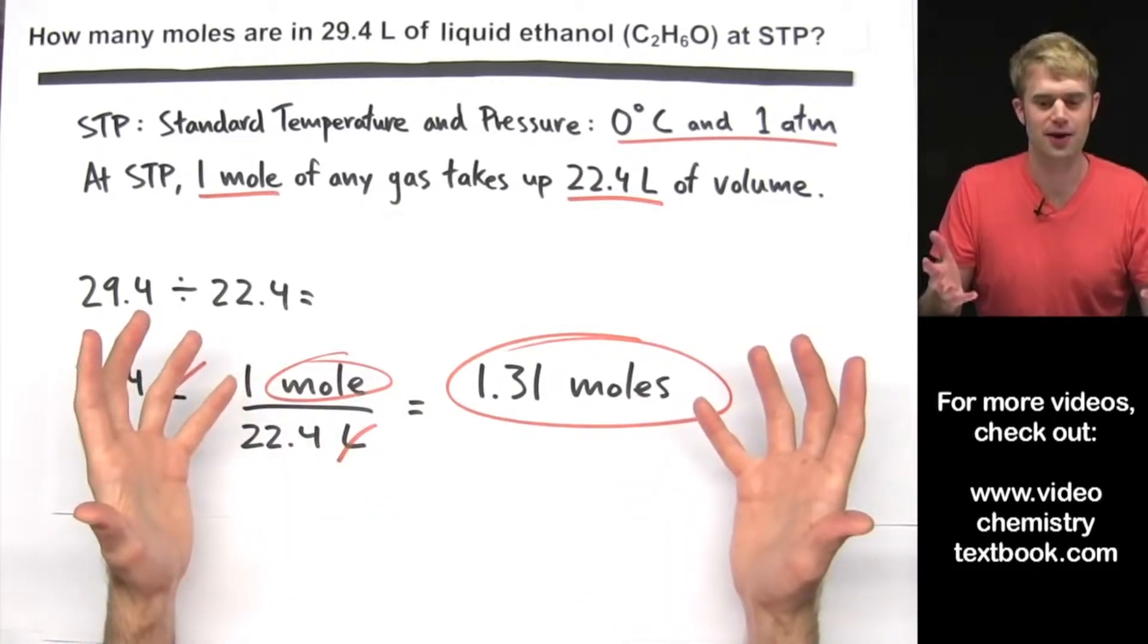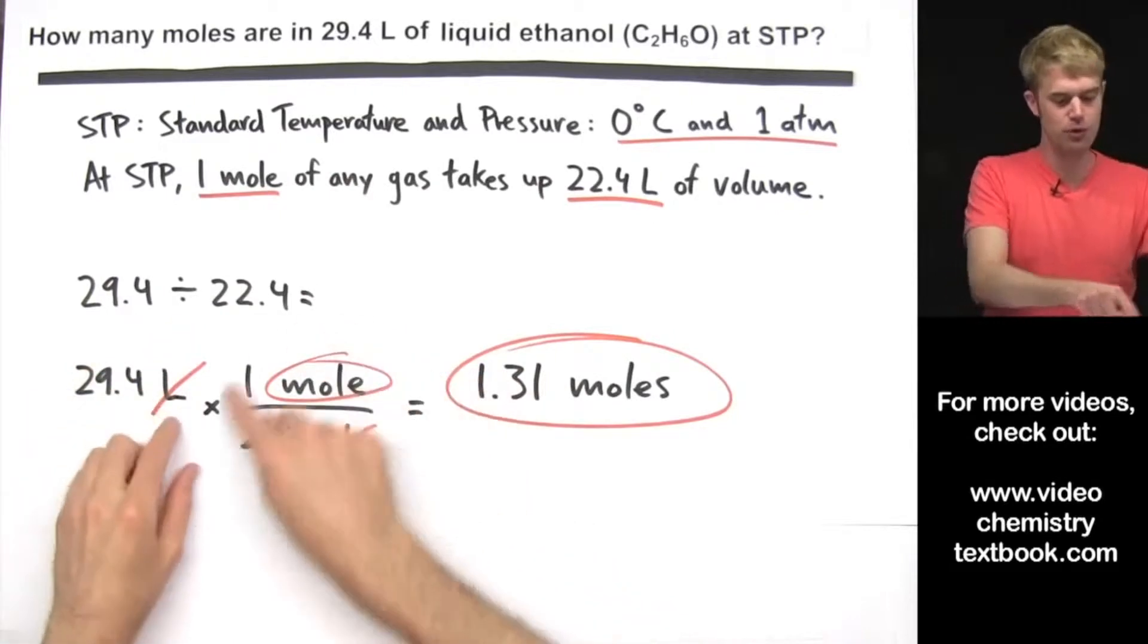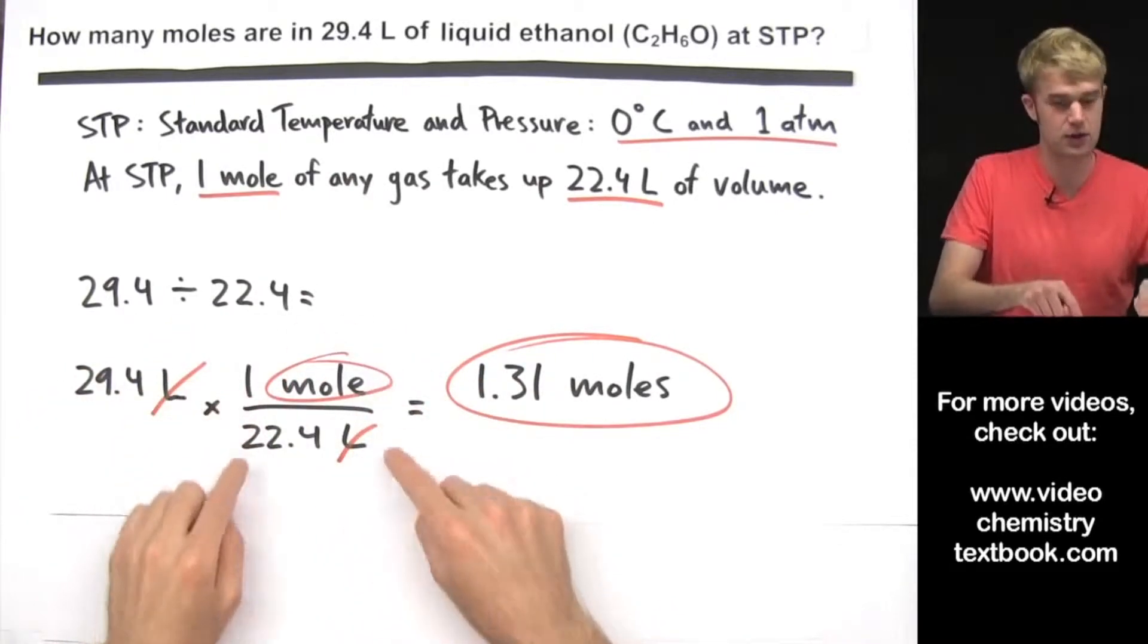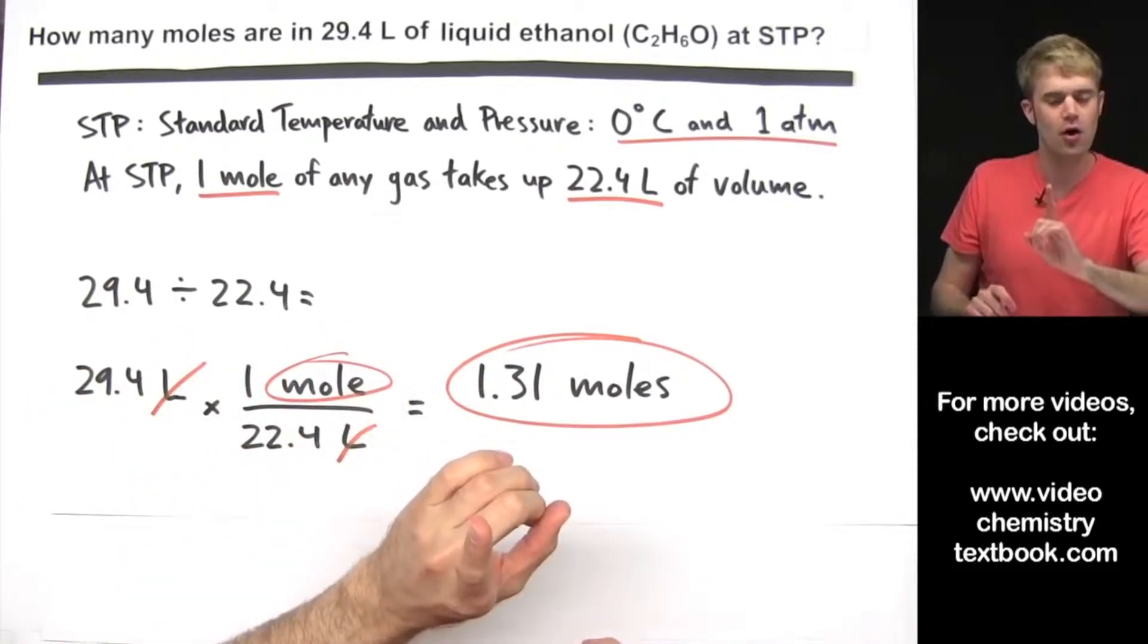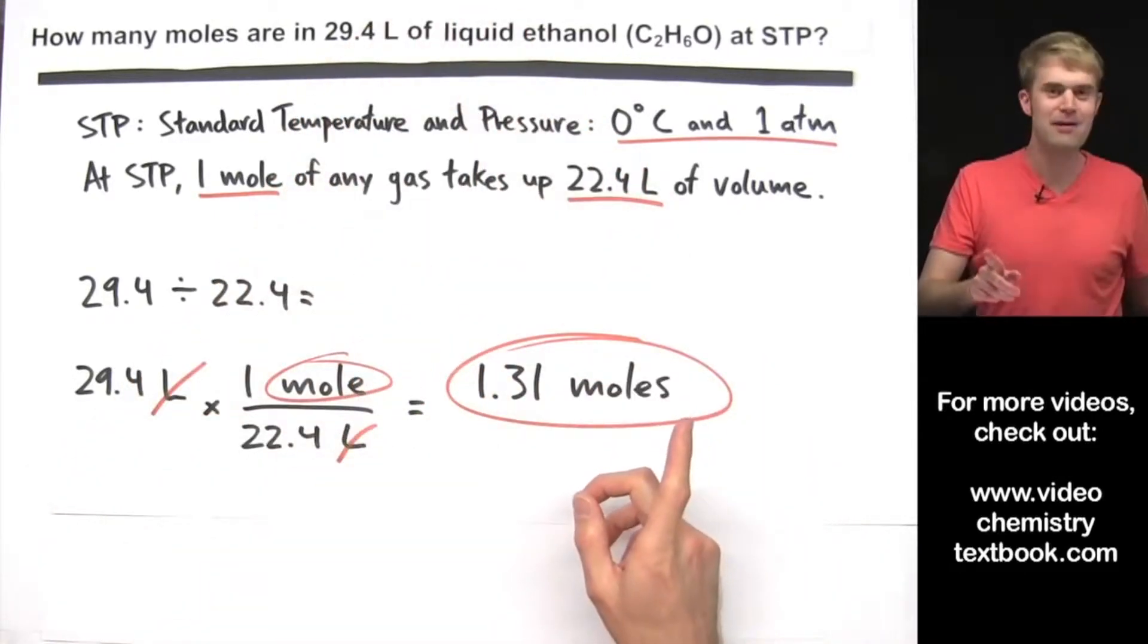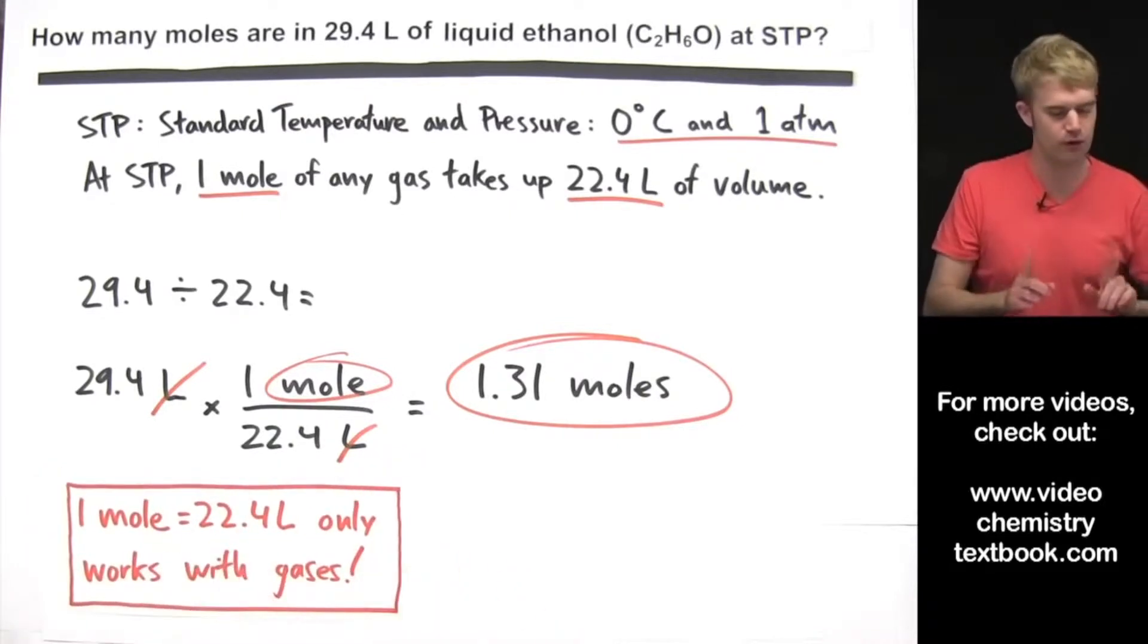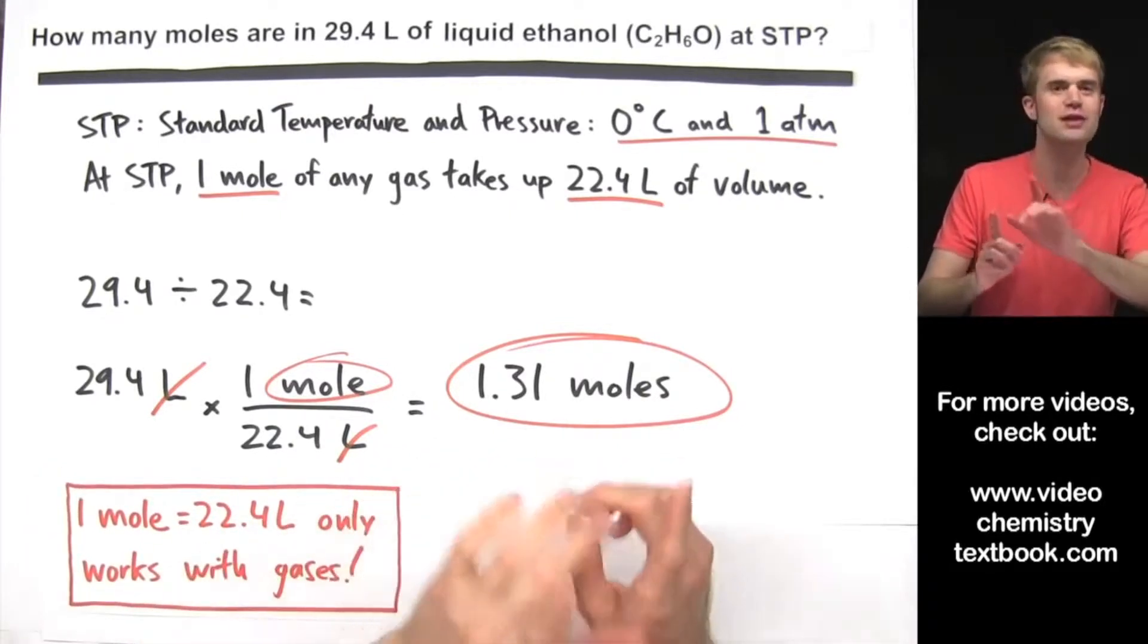Why isn't this right? We're at STP so we can use 1 mole equals 22.4 liters and we can multiply it by this conversion factor. But can you see the trick here? We're talking about liquid ethanol. And this idea of 1 mole equals 22.4 liters only works with gases.